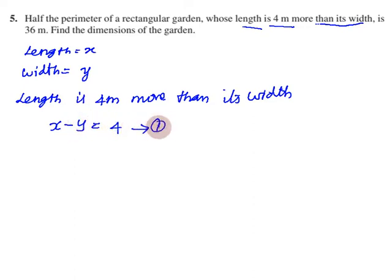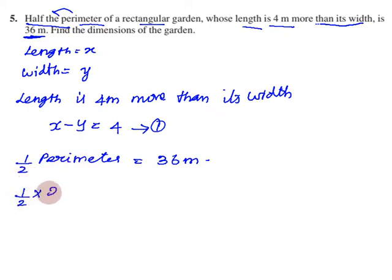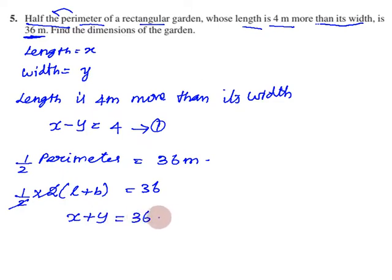Half the perimeter of the rectangular garden is 36 meters. The formula for perimeter is 2 times (length plus breadth). So half the perimeter equals length plus breadth, which gives us x plus y equals 36. This is Equation 2.